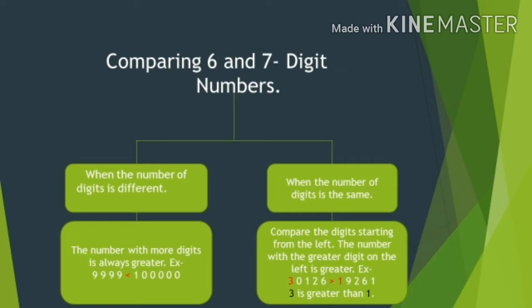If two numbers with different number of digits are given, the number with more digits is always greater. This means if you have to compare two numbers and find out which one is bigger, first count the digits in the given numbers. Whichever number has more digits is the greater one.